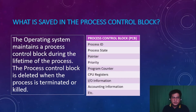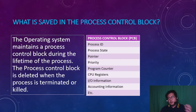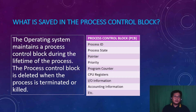The process control block stores the process ID, process state, pointer, priority, program counter, CPU registers, I/O information, accounting information, and other relevant information. The operating system maintains a process control block during the lifetime of the process; the PCB is deleted when that process is terminated. When a new process is created, the OS creates a new entry in the PCB, and when a process is executed and completed, that entry is deleted to give space for new processes.